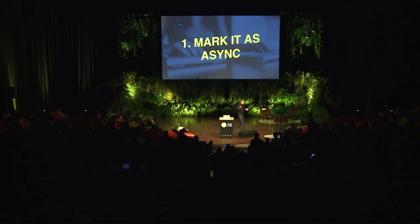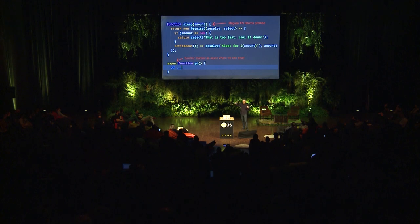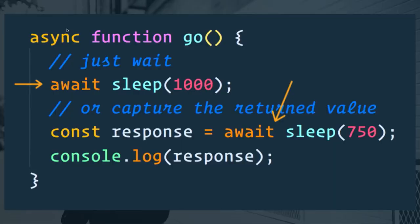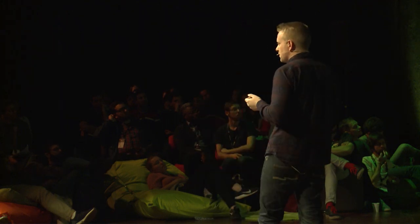So how does it work? The first thing we need to do is mark our function as async. You still keep your regular promise functions — nothing changes with functions that return a promise. What we do now is create an async function by writing the word async in front of it. Then when you're inside of an async function, you simply await things inside of it. You can either just await a function like sleep, which will just wait until the promise resolves, or if you care about what's coming back — maybe it's some data from an API — you can store that in a variable. It's the best of both worlds.